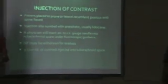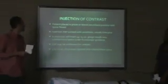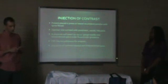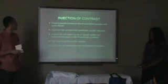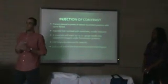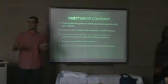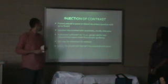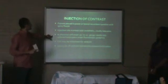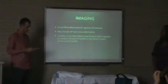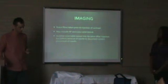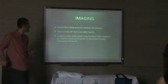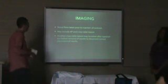For the exam, the patient will be placed prone or lateral recumbent on the fluoroscopy table. The injection site will be numbed, and the physician will insert a 20 or 22 gauge needle under fluoroscopic guidance into the subarachnoid space. One indication that the needle is correctly placed is that cerebrospinal fluid will flow back into the needle. Some of this may be withdrawn for analysis, and then a small amount of contrast is injected. A scout film will be taken prior to injection, and another cross-table lateral will be taken after injection but before removal of the needle to confirm correct placement.